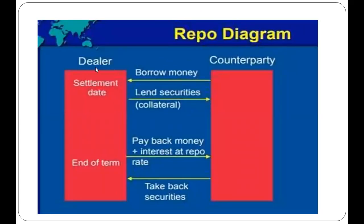In the repo diagram, the counterparty borrows money from the dealer and lends securities. At the end of the term, the counterparty pays back the money plus interest at the repo rate, and the dealer returns the securities. This is the complete process of a repo transaction.